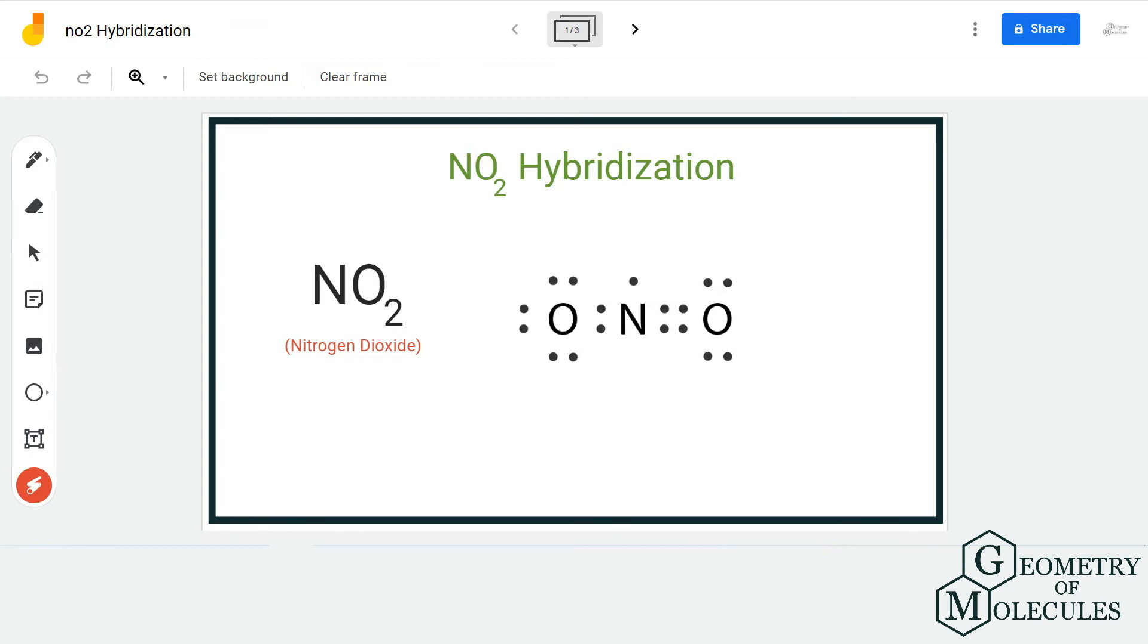Hi guys, welcome back to our channel. In today's video, we are going to help you find out the hybridization for NO2 molecule, the chemical formula for nitrogen dioxide. While there are many methods you can use to find out the hybridization of any given molecule, here we are going to use the steric number to find out the hybridization because it is the easiest method.